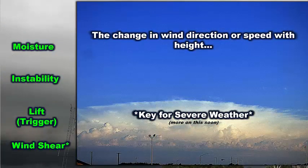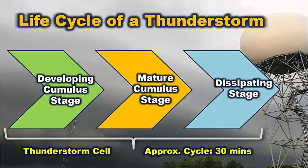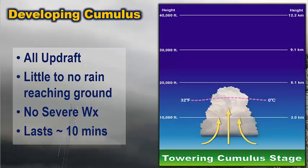Wind shear refers to how the wind direction or speed changes with height. The life cycle of the thunderstorm consists of three stages, and the whole cycle takes only about 30 minutes to complete. First is the developing cumulus stage, then the mature cumulus stage — the heart of the thunderstorm where all hazards are on the table — and lastly the dissipating stage, where the storm comes to an end.